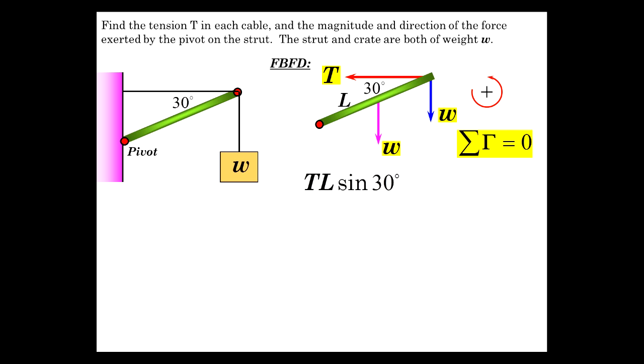Here I gave the positive sense of rotation. Sum of torques equals zero means torques counterclockwise equals torques clockwise. We have the tension times the amount of the strut that's perpendicular to that. So the moment arm through which that tension acts is T, the hypotenuse sine of 30 degrees. That's the counterclockwise torque. The clockwise torque, there's going to be two of them.